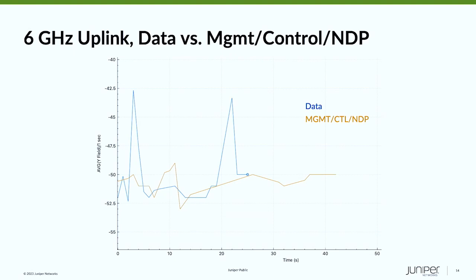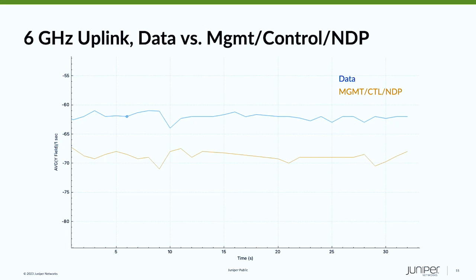Doing some more in-depth packet captures with clients — this is a 6 GHz tablet — one thing that jumped out is when you look at the uplink RSSI of data frames versus management, control, and null data packets: when we're close to the AP, it's pretty even. But when we get a little bit further away, you start to see a gap, maybe 6 dB opening up. Maybe that's because the data frames can be transmitted at higher power, or there may be other reasons. That's something to think about with sticky clients — as they get further away, their management and control traffic is going to be received a lot lower.